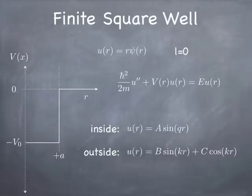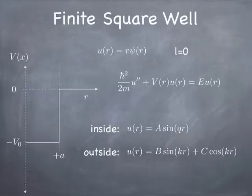You know this differential equation well by now. To satisfy the boundary condition at the origin, the inside wave function has to go like sine. The outside wave function has no such boundary condition, so it's free to be a little bit of cosine and a little bit of sine. The wave number inside and outside are different — inside it corresponds to an additional kinetic energy of v-naught, and outside it's just the free kinetic energy, h-bar squared k squared over 2m.